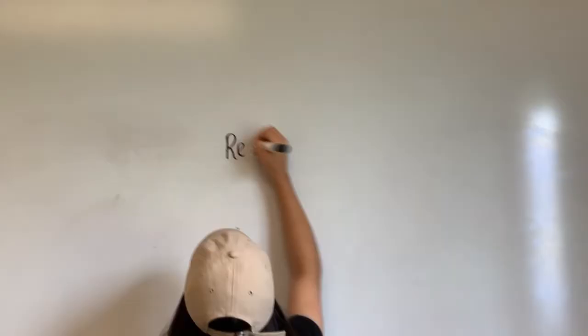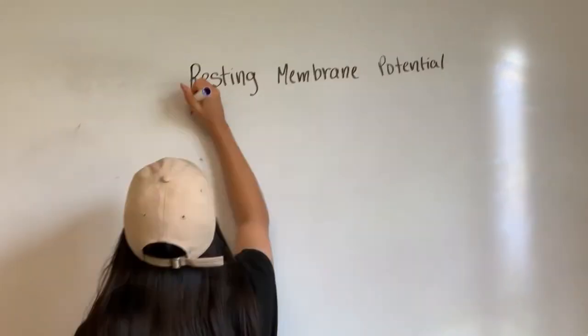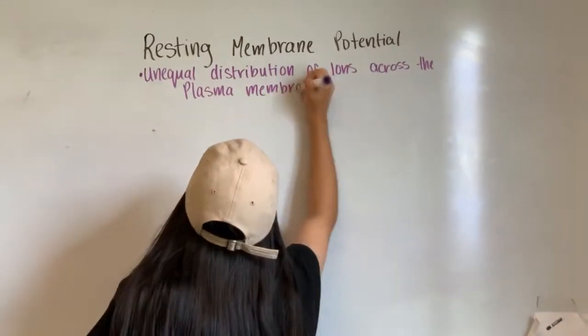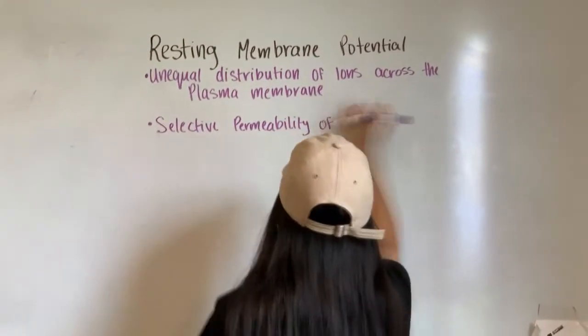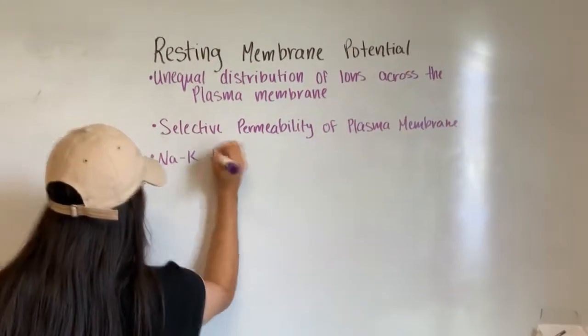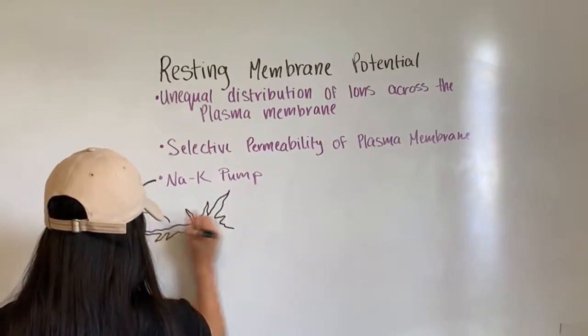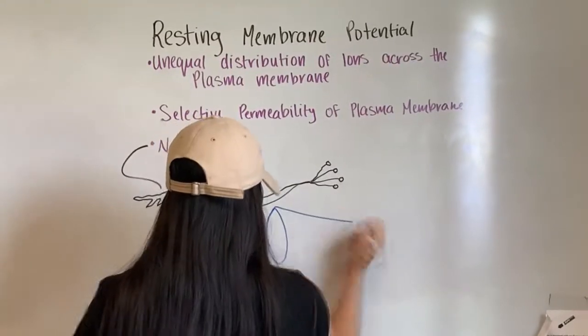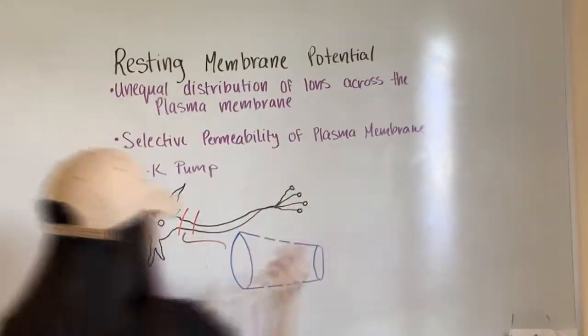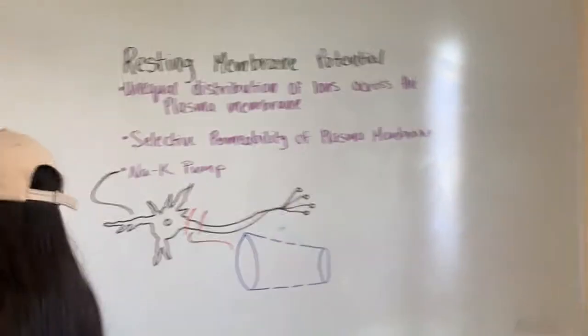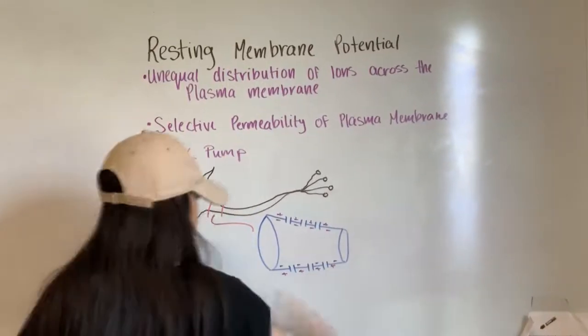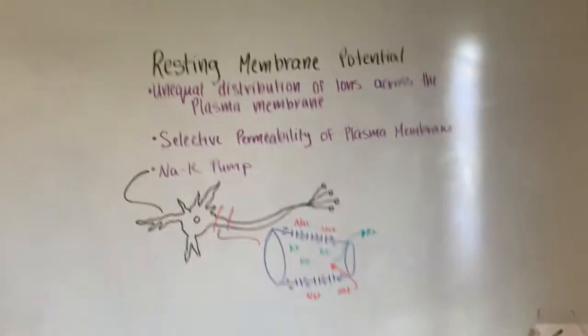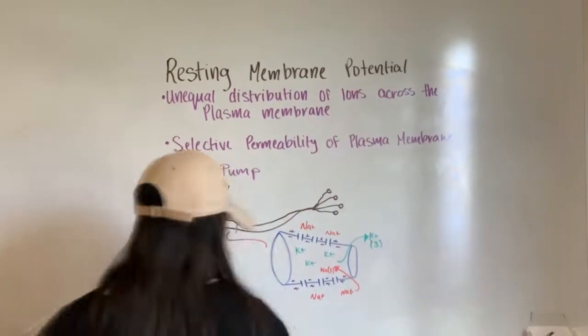The resting membrane potential occurs because of leakage channels. There is an unequal distribution of ions across the plasma membrane. There are different ions in different places around the axon hillock. The sodium potassium pump moves molecules from a high concentration to a low concentration. It runs on ATP and it moves three sodium out and two potassium ions in. Potassium diffuses easier out of the cell compared to sodium. The sodium potassium pump stabilizes the resting membrane potential.